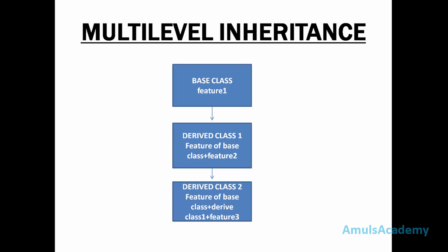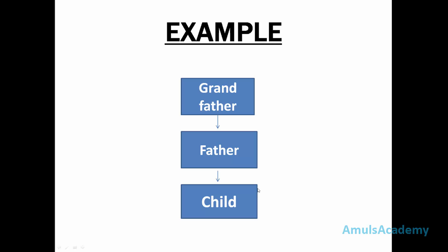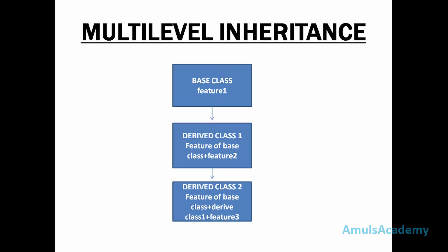We will take one example. Here we can see: 'child' is a derived class from the class 'father', and the 'father' class is derived from 'grandfather'. Multilevel inheritance is nothing but there will be a base class, and we derive another class from this base class, and from that derived class we derive another class.